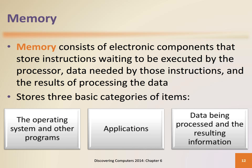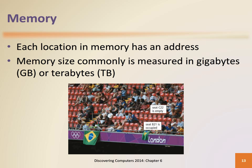Memory consists of one or more chips on the motherboard or other circuit board. Memory is measured by the number of bytes available for storage. A byte is a basic storage unit in memory. There are three categories of items that memory stores: the operating system and related software, application programs used to carry out a specific task, and the data being processed by the application programs. When an application's instructions and data are transferred to memory from storage devices, the instructions and data exist as bytes.